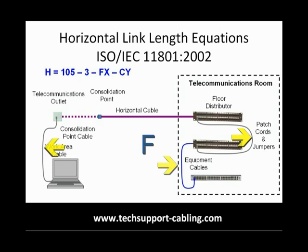F is the combined length of all the patch cords or jumpers, equipment cables, and work area cables. Let's have a 5m work area cable, a 3m patch cord, and a 2m equipment cable.